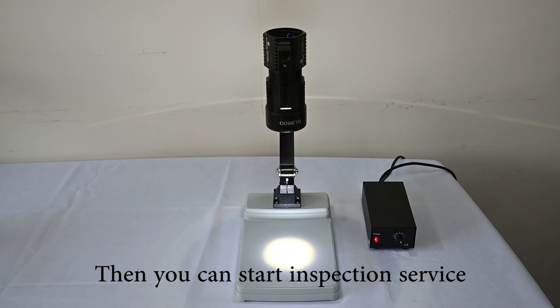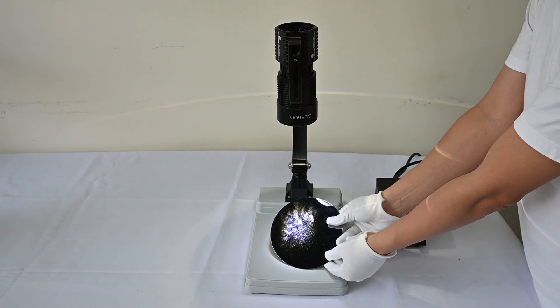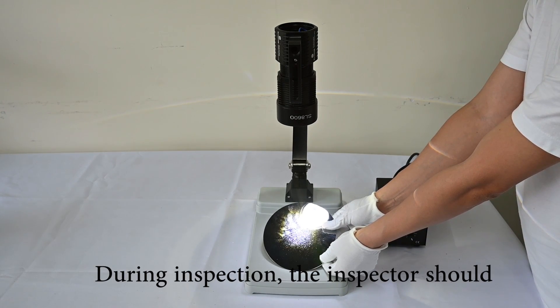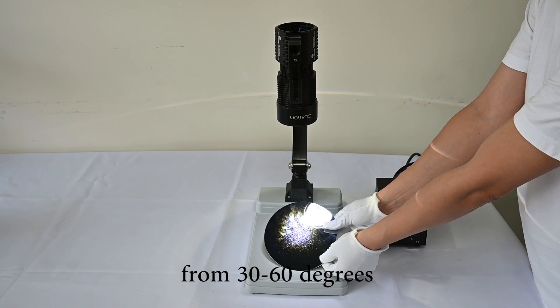Then, you can start inspection service. During inspection, the inspector should adjust the angles of the sample under the base from 30 to 60 degrees.